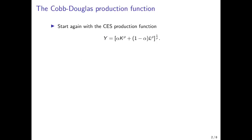We start again with the constant elasticity of substitution production function — the CES production function — where output is produced with physical capital and labor, and the elasticity of substitution between these two production factors is determined by rho.